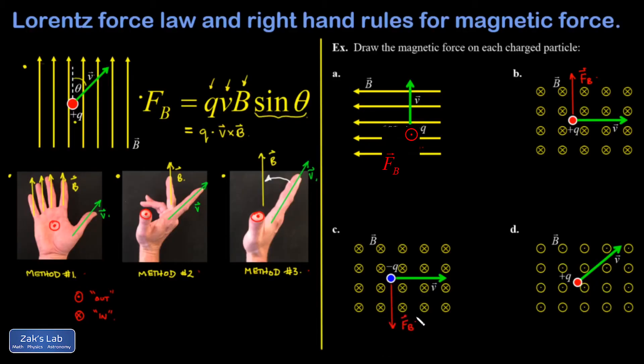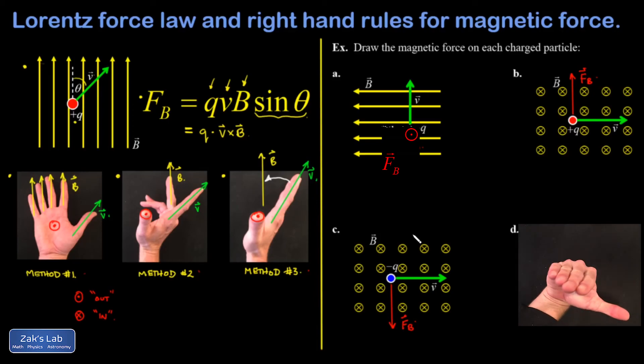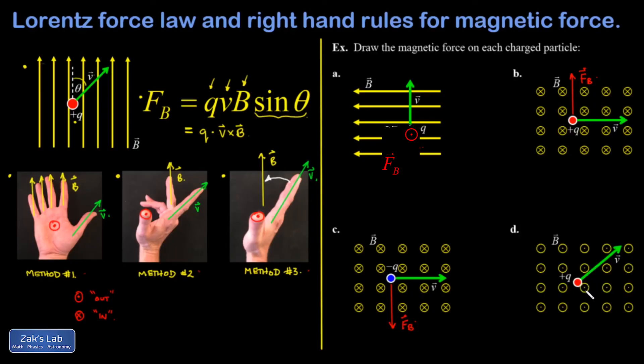And then finally, in part D, I have a velocity at some angle, and I have a magnetic field that's pointing out of the page. So I try to orient my hand in a way that allows me to sweep out with my fingers in the direction of V to the direction of B. So my fingers pointing up and to the right and then sweeping out of the page. And that gives me a magnetic force in this direction.